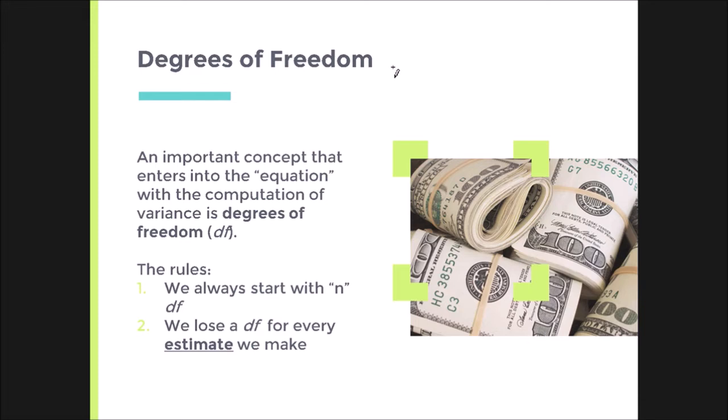Every person can take on whatever value they want. But once we start doing estimation or computation, we spend degrees of freedom and essentially lock scores in place. What do I mean by this? Well, let's get those same numbers: three, seven, nine and nine. So we've got these values.